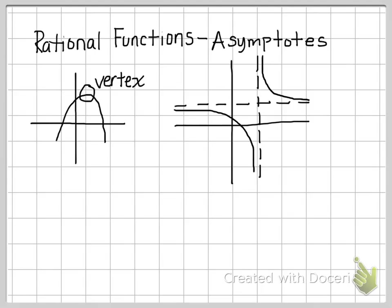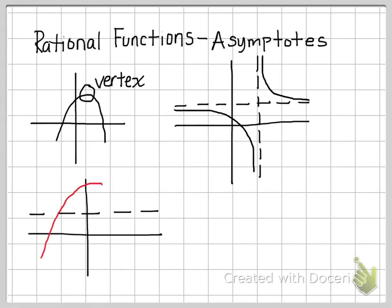Here's an example: an asymptote can be crossed — the graph crosses it, then comes back down and eventually approaches the asymptote again. So the asymptote is not defined by being uncrossable; it is defined by being eventually approached. This is a rare case, but you do need to be aware of it because it can certainly come up.